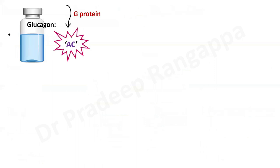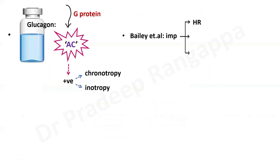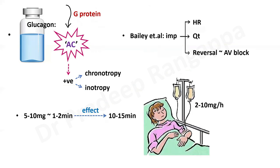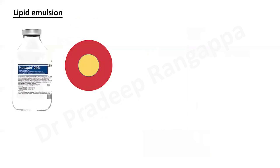Regarding glucagon: it causes activation of adenylate cyclase through G protein and has positive chronotropy and positive inotropy. Animal studies by Bailey et al. have shown it improves heart rate, cardiac output, and reversal of AV block. The glucagon dose is 5 to 10 mg over 1 to 2 minutes, the effect lasts 10 to 15 minutes, and it should be given as an infusion at 2 to 10 mg per hour. In our patient, we gave calcium, insulin — the game changer being maximizing the insulin dose — and glucagon at this dose. Side effects of glucagon include vomiting, hyperglycemia, and hypokalemia.